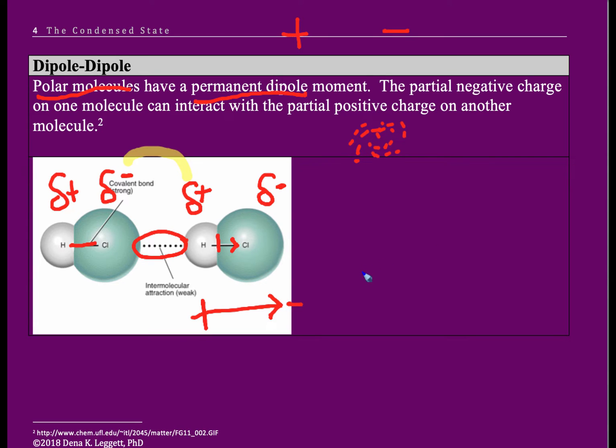For dipole moments, we show a dotted line between the two. When it's pure, it would be called a dipole-dipole attraction or interaction.